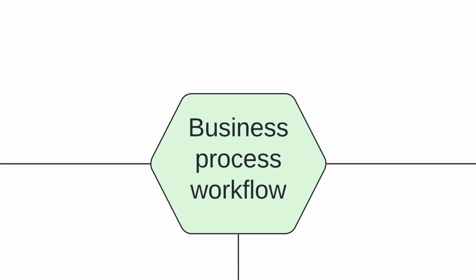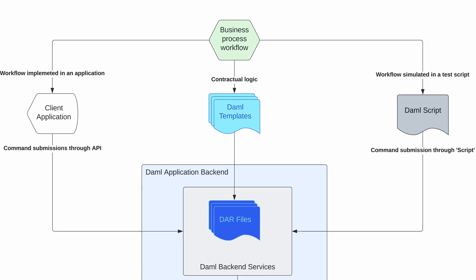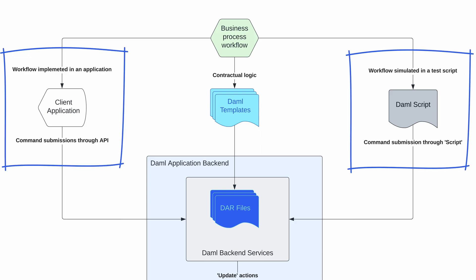When building an application, we analyze the business process workflow. From that workflow, we capture the contractual logic for business agreements in DAML templates. These templates are compiled into DAR files — that is, a DAML archive file — and then uploaded to the DAML application backend or participant node. These DAR files are used by external client applications through the Ledger APIs, or through scripts by submitting commands.